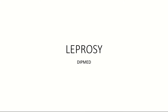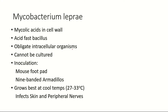The causative organism is Mycobacterium leprae. The name 'Mycobacterium' comes from mycolic acids that are present in the cell wall of these bacteria. These bacteria are also called acid-fast bacilli because when they are stained using a method called Ziehl-Neelsen staining, suppose when you take a specimen that contains Mycobacterium leprae and stain it using this method...